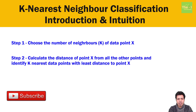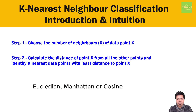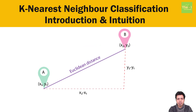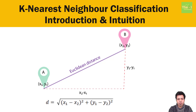Step 2: calculate the distance of point x from all other points and identify the k nearest data points with the least distance to point x. This distance can be calculated using Euclidean, Manhattan, or cosine methods, but the most widely used one is Euclidean, so we will use it here. The Euclidean distance is something we learned in high school geometry — it's based on a right-angle triangle where the distance is the hypotenuse. Data point A has coordinates x1 and y1, and data point B has coordinates x2 and y2. The distance is calculated as: D = √((x2−x1)² + (y2−y1)²).